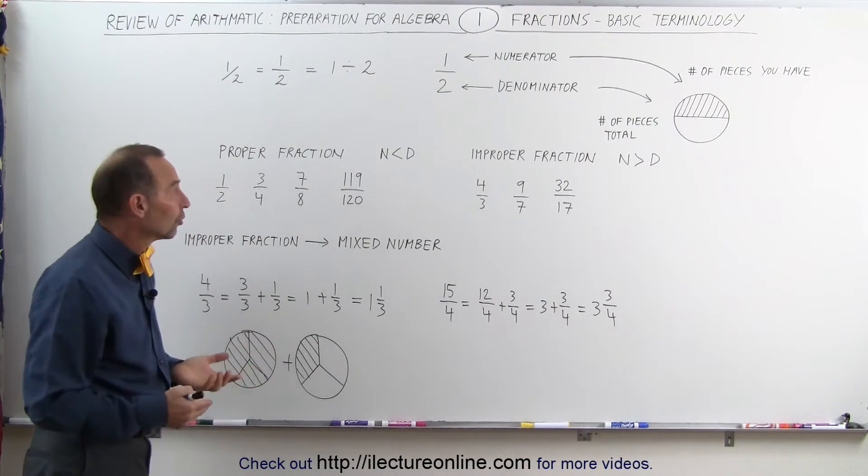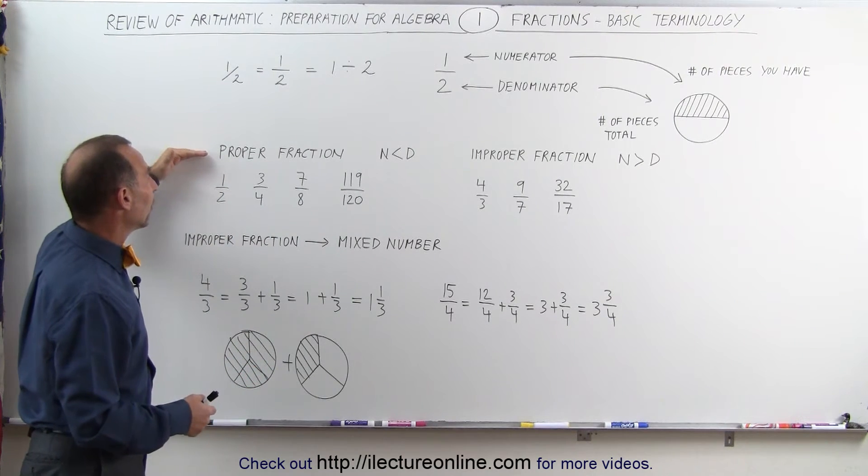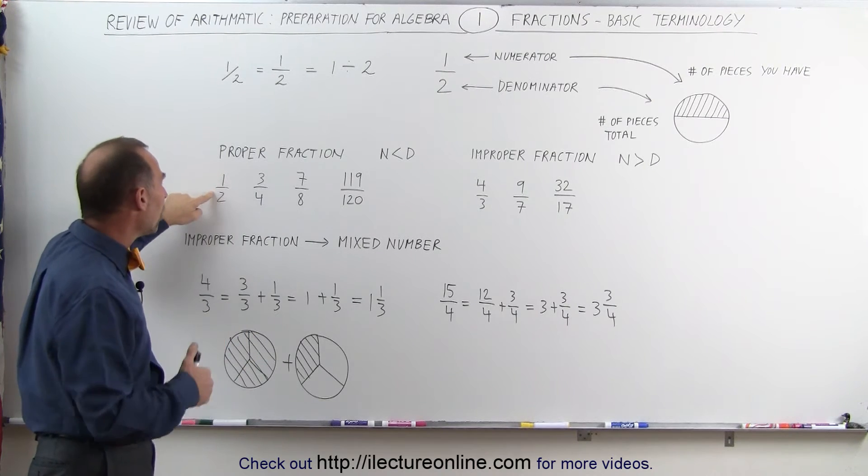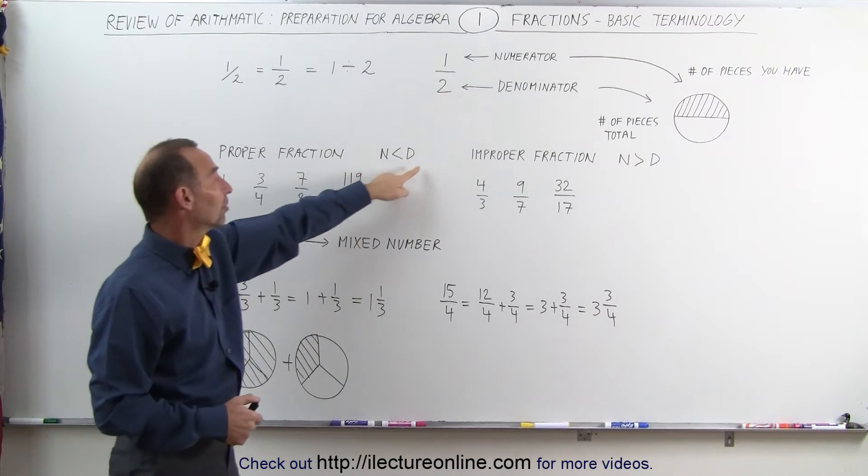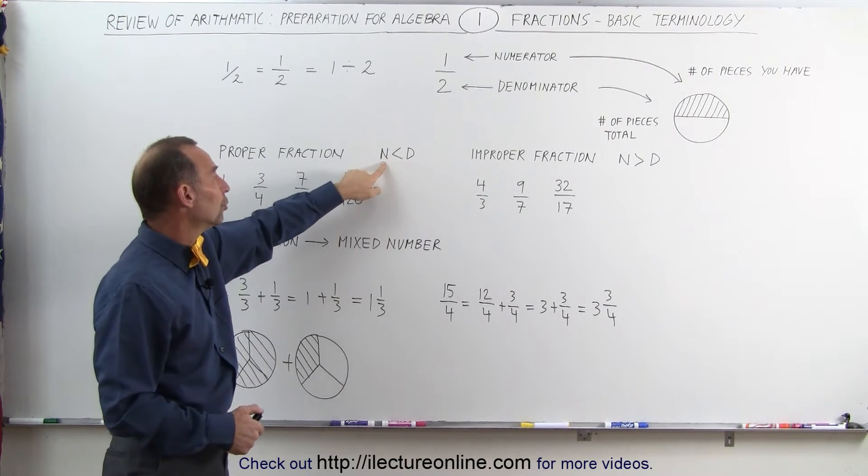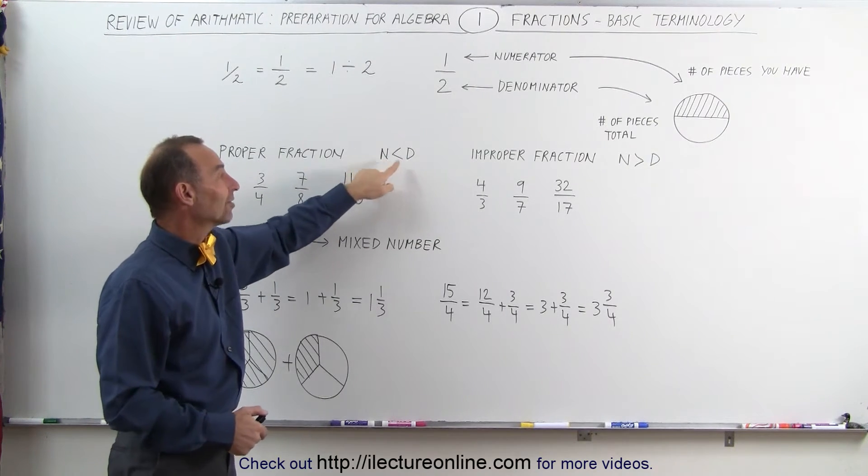Now there are different kinds of fractions. There are what we call proper fractions. A proper fraction is a fraction that has a numerator that is smaller than the denominator. This is the symbolism that we use: n for numerator, d for denominator, and the numerator is smaller than or less than the denominator.